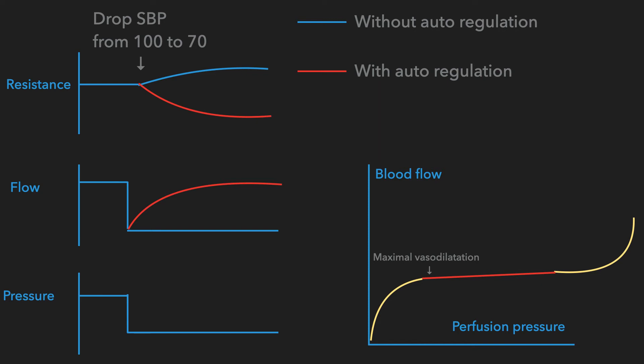During resting conditions in a normal person without pathophysiology, you have a constant blood flow. That constant blood flow to organs is regulated by constant adjustments of resistance and pressure, maintaining steady blood flow. At the junction between the yellow and red zones on the graph is where maximal vessel dilation occurs. Once perfusion moves further into the yellow zone, you totally lose autoregulation, and blood flow becomes entirely perfusion pressure-dependent.